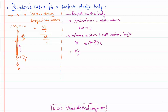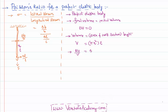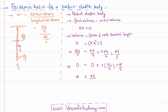For this, I am going to use the errors and approximation concept. Delta V by V equals delta pi by pi — which is zero since pi is a constant — plus 2 times delta r by r (because the power of r is 2), plus delta l by l. Since the body is perfectly elastic, delta V by V equals zero, so 2 times delta r by r plus delta l by l equals zero.